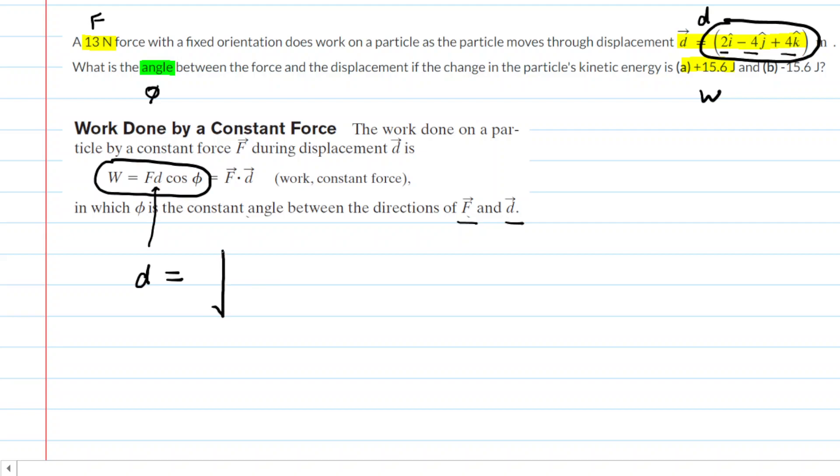We might have learned in an earlier chapter that to find the magnitude of a displacement vector, we have to take the square root of the x component squared plus the y component squared, and then plus the z component squared. It's basically a three-dimensional version of the Pythagorean theorem.